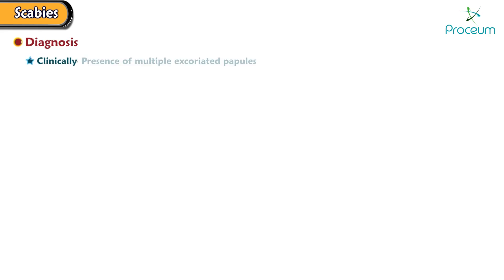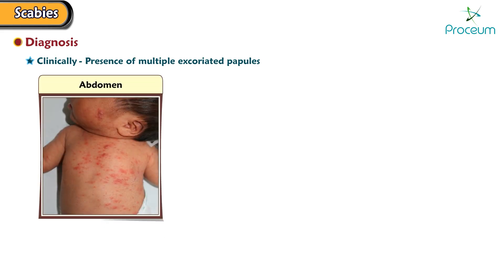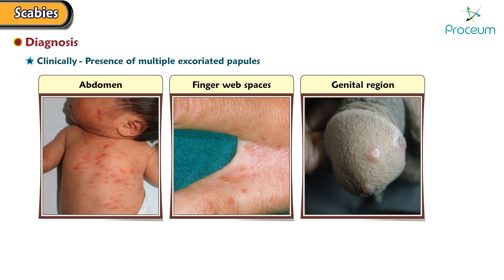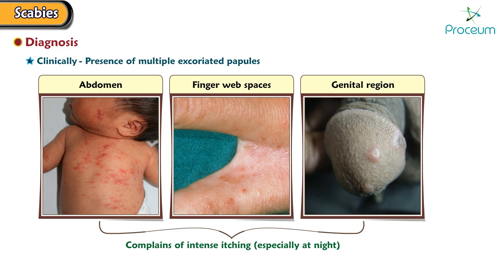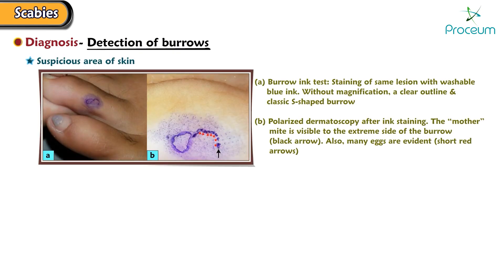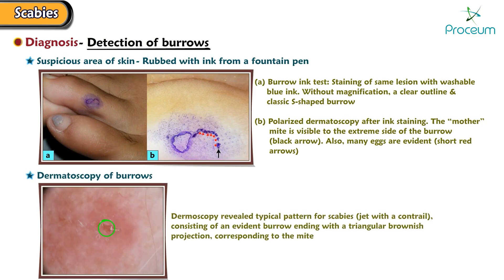Now let's learn about the diagnosis of scabies. Usually, scabies can be diagnosed clinically by the presence of multiple excoriated papules over the abdomen, fingerweb spaces, and genital region. The patient frequently complains of intense itching, especially at night. The suspicious area of skin can be rubbed with ink from a fountain pen, which will glow under a special light. Dermatoscopy of burrows shows a jet with a contrail sign.